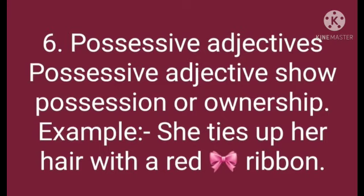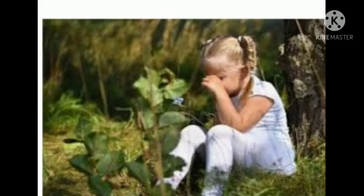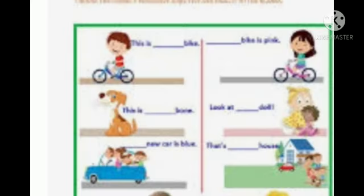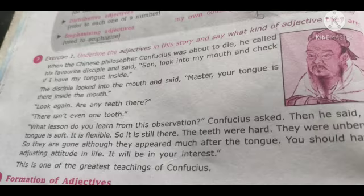Possessive adjectives show possession or ownership. For example: They are our friends. She has lost her book. Our and her are possessive adjectives used before a noun to qualify it. Hope you understood up to here. Now solve this exercise on your own as homework.